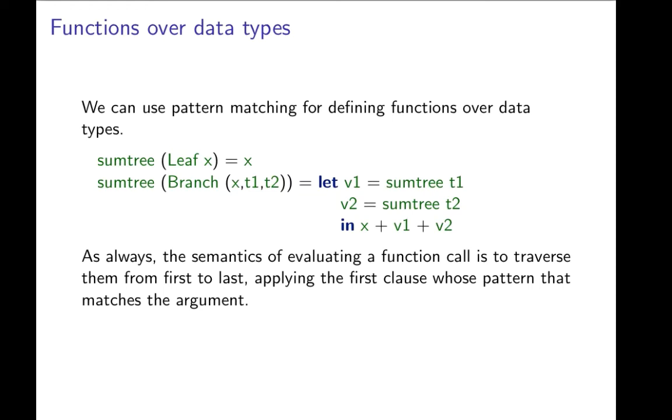Here's an example. Suppose we want to define a function that sums the integers found in an integer value tree. Then, we need to have two clauses, one for each of the two formation rules in the data type definition for tree. We need to have a clause for the case where the term constructor is leaf. That is, the tree is a leaf. And if we have a leaf that's labeled with the integer x, we return x.